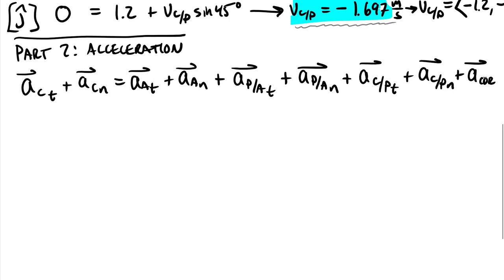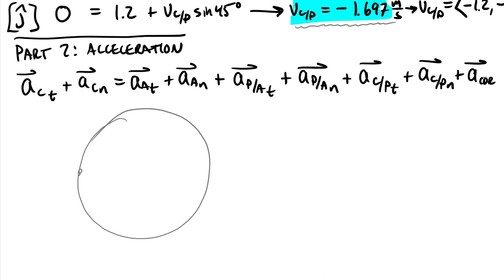I'm going to draw a diagram just below this equation. It will look similar to the velocity diagram but with more vectors. We have point A, an arm in fixed-axis rotation up to point B at the apex of the circle. Point P is a marker placed on arm AB. The collar slides along arm APB and also around the ring, and we call the pin on that collar point C.